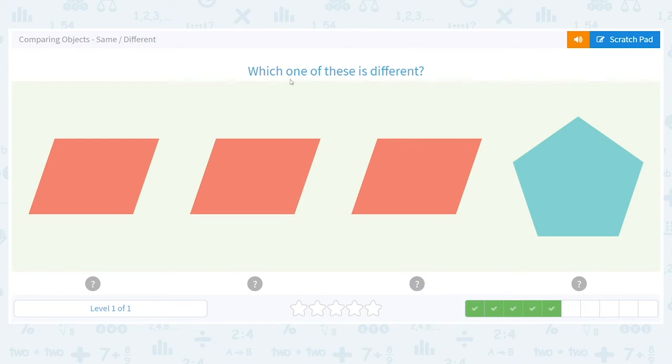Now, this time we want to know which one of these is different. I see this shape. Do you remember what it's called? It's called a parallelogram. So I have parallelogram, parallelogram, parallelogram, and a pentagon. Which one is different? Definitely the pentagon.